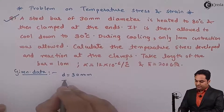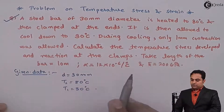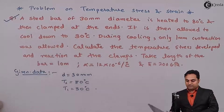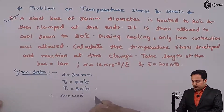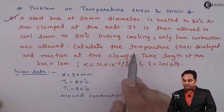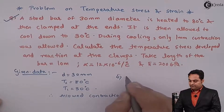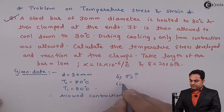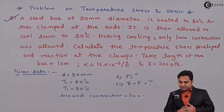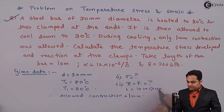So 80 degree Celsius I will keep as temperature T2, and 30 degree Celsius that is T1. Next, it is said that during cooling only 1 mm contraction was allowed. So therefore allowed contraction is 1 mm. Then we have to calculate the temperature stress developed and reaction at the clamps, denoted by R equal to F. Take length of the bar as 10 meter, or 10 into 10 raised to 3 mm.